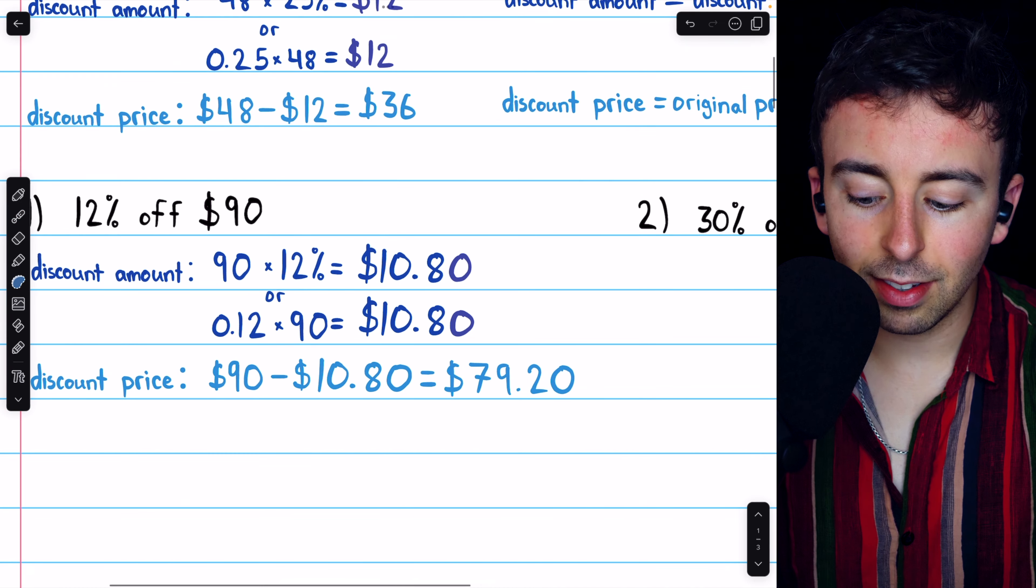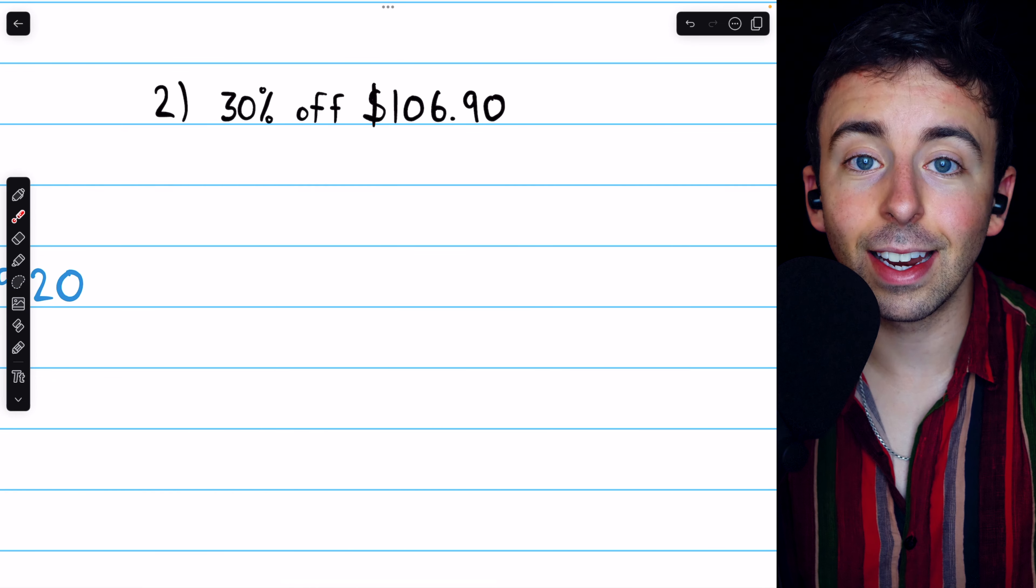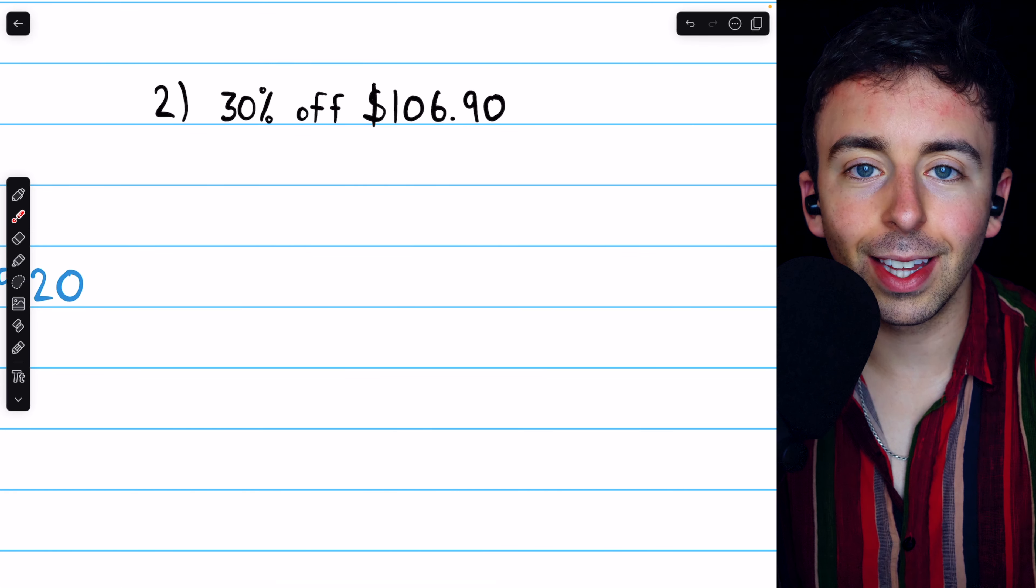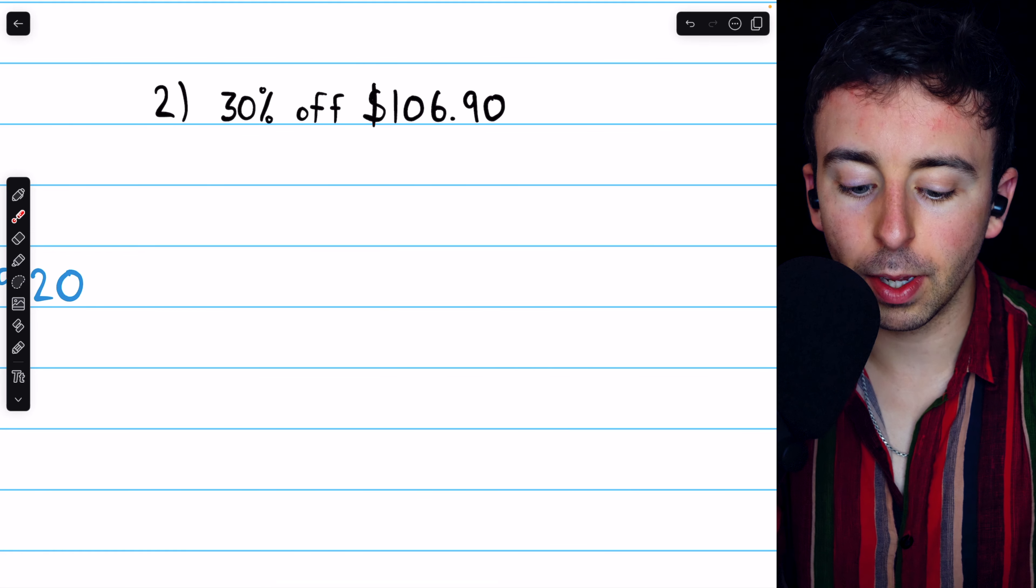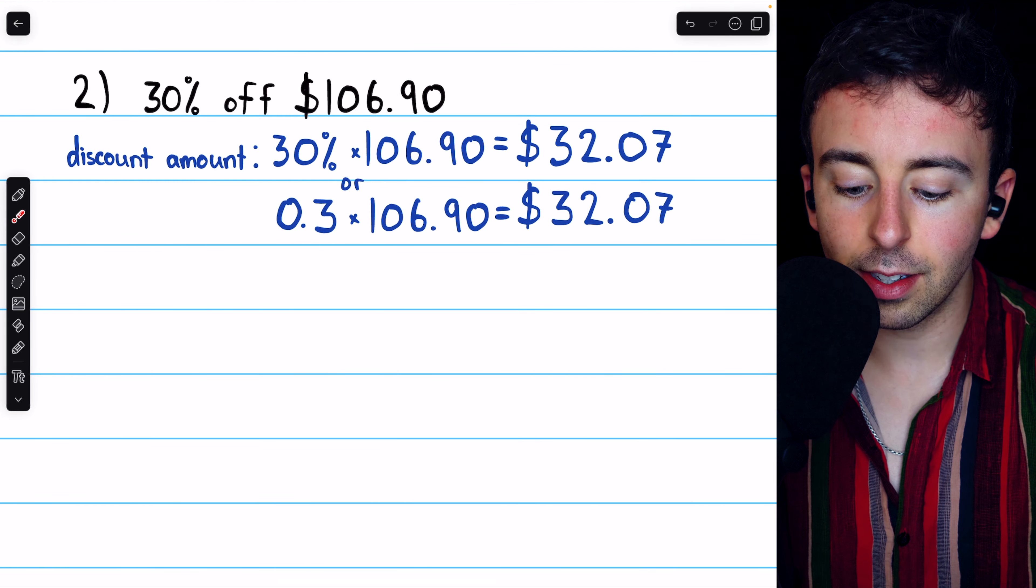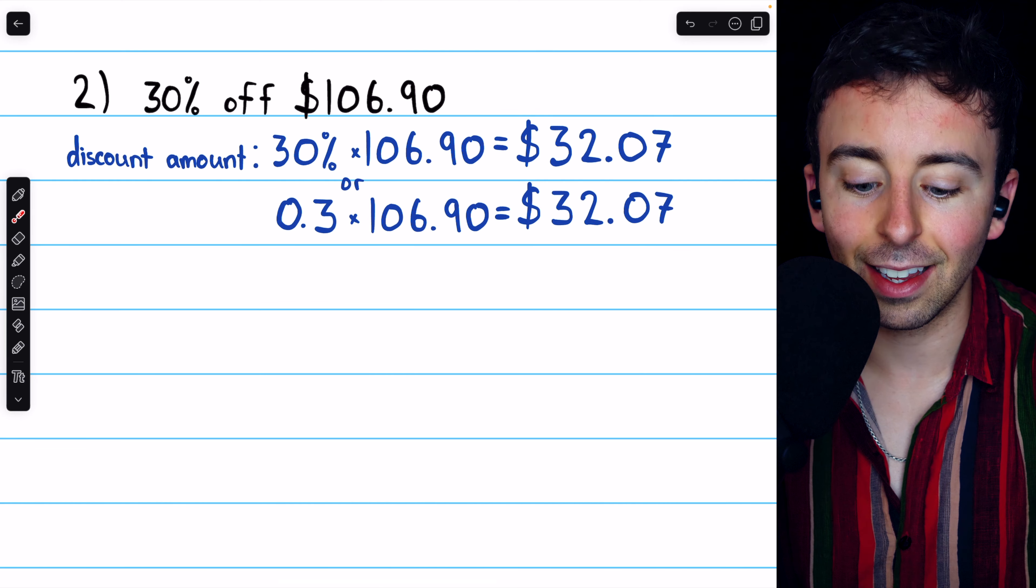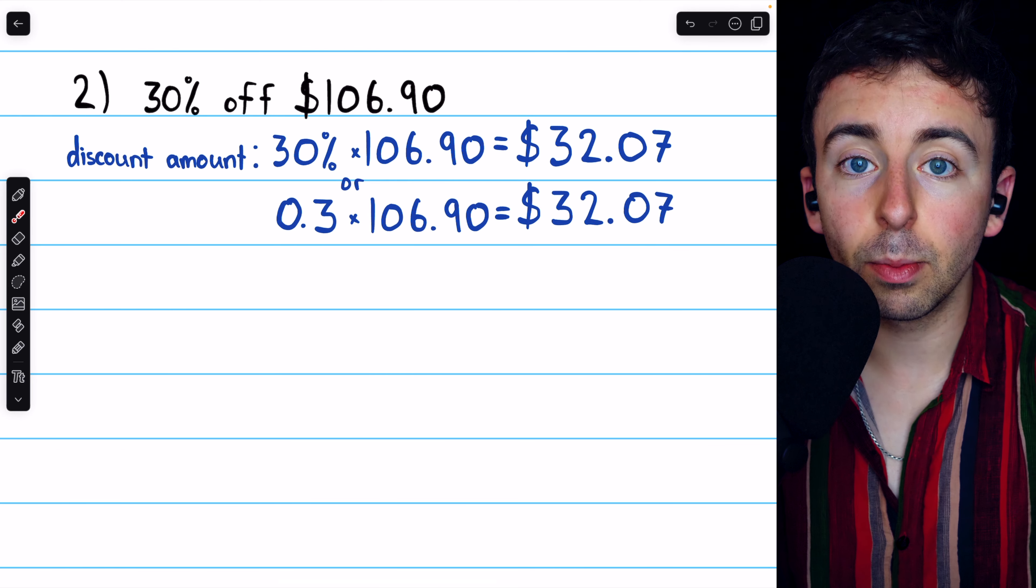Finally, let's finish with this second example. The discount is 30% off $106.90. We'll begin by calculating the discount amount, multiplying the discount rate by the original price. So that's 30% times $106.90, which if you put in a calculator, remember you'll want to put the percent last.